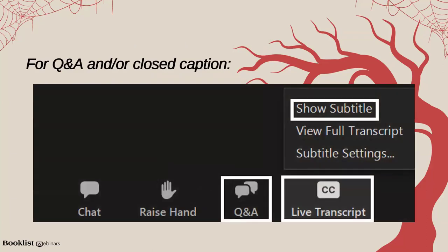Links to SummerScares resources and information were included in the reminder email you received from Zoom one hour ago. To download them, please open that email, scroll to the bottom, and click on the link located there. You can also download the materials by copying the URL on this screen into your web browser. If you have any trouble, please contact us at webinars@booklistonline.com.